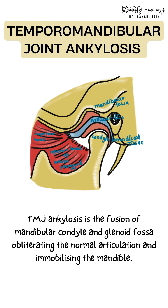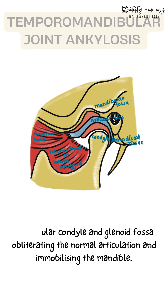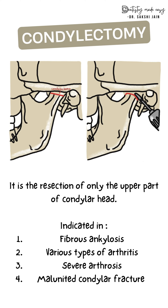There are three major types of ankylosis: fibrous, osseous, or bony. The surgical options for treating ankylosis are high condylectomy, gap arthroplasty, and interpositional arthroplasty. In this video, we are going to see one of those treatment options — high condylectomy.